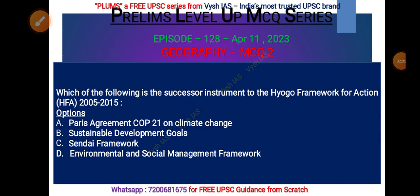The second MCQ: which of the following is the successor instrument to the Hyogo Framework for Action, which spanned 2005 to 2015? After that, another instrument was signed. Options are: Paris Agreement COP 21 on climate change, Sustainable Development Goals, Sendai Framework, or Environmental and Social Management Framework. Pause the video and answer.